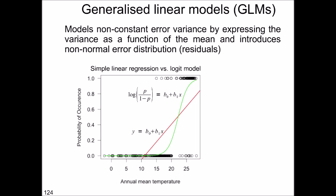The generalized linear model is able to model this non-constant error variance by expressing the variance as a function of the mean, and in addition it introduces non-normal error distributions of residuals — the possibility to specify different error distributions when modeling. Let's look at one example of a GLM.